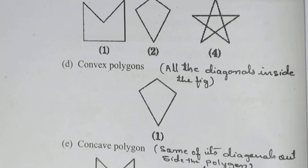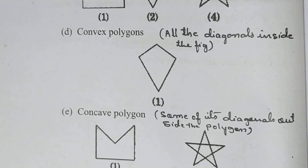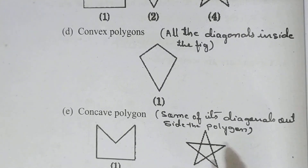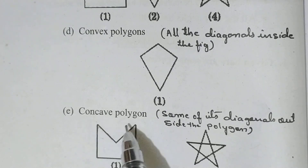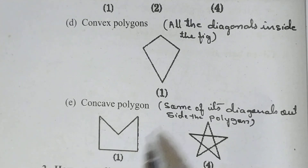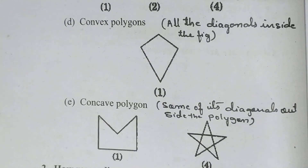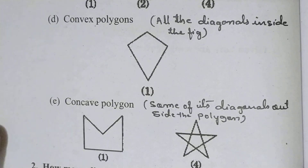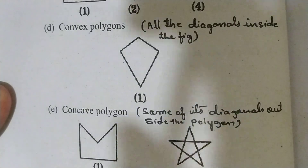Next, (E) concave polygon. What is a concave polygon? Some of its diagonals lie outside the polygon. Here we can draw a diagonal outside the figure. So this type of figure is said to be a concave polygon.